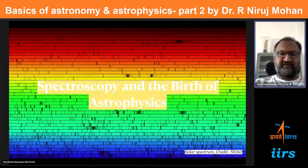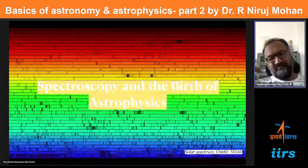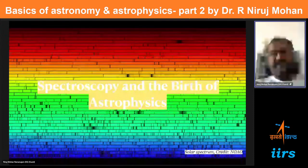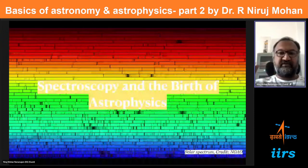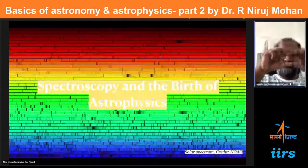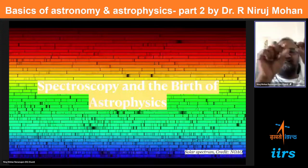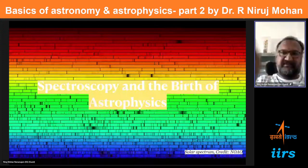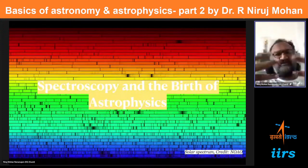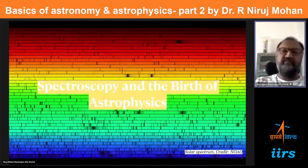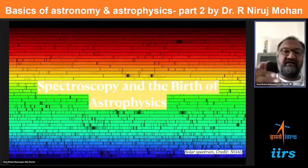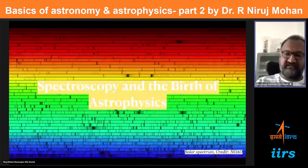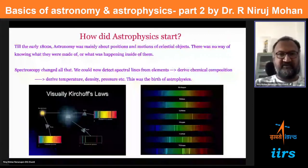We're going to talk about spectroscopy and how it gave rise to the birth of astrophysics. What you see in the background is the spectrum of the sun, going from red to violet. We can immediately see that the spectrum has all colors, like Newton famously showed, but there are dark lines in between — and the dark lines are where the physics lies.